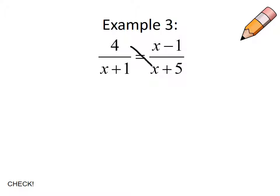In this example we have a fraction equal to a fraction, so we're going to cross multiply. That means I'm taking 4 times the x plus 5 and the x plus 1 times the x minus 1.